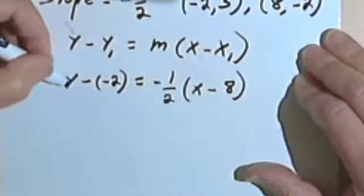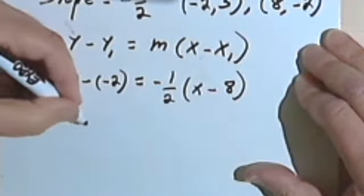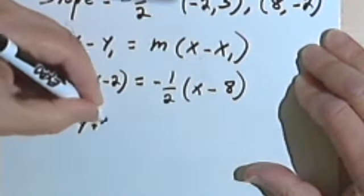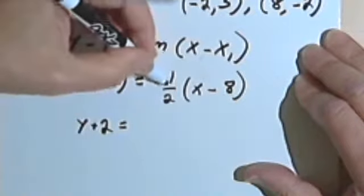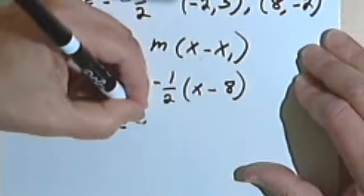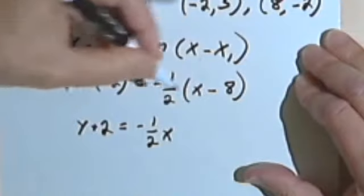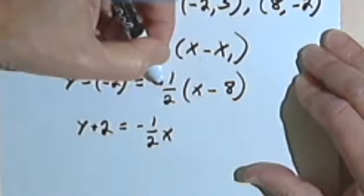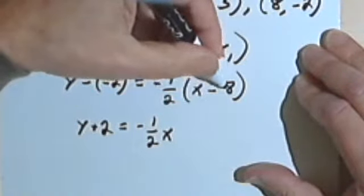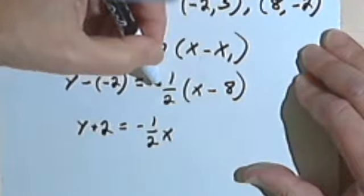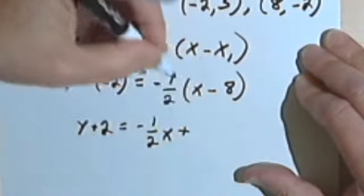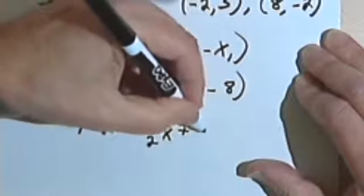Okay, so this is y minus negative 2. Well minus negative 2 is plus 2, equals... distributing the negative one-half, negative one-half x minus one-half times negative 8... well, a negative times a negative will give me a plus. And then I've got one-half of 8, and that's 4.